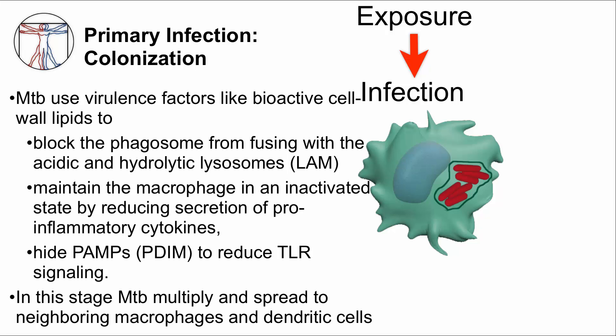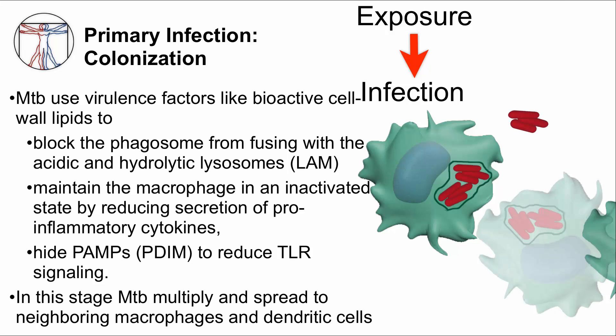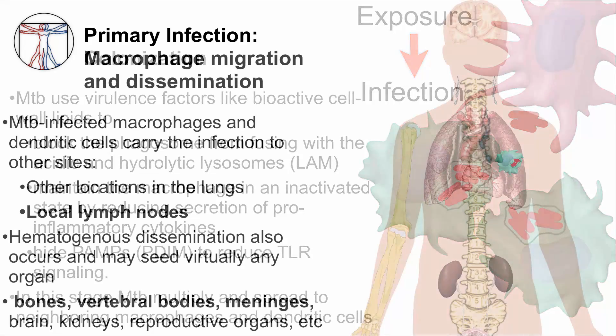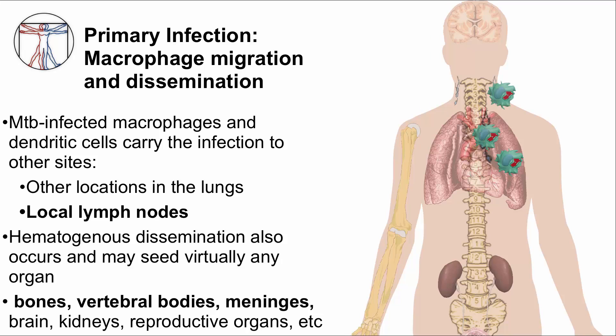The drawing represents MTB surviving within the phagosome of a macrophage. During this stage, MTB not only survives within the macrophage, but it can multiply and spread to neighboring macrophages and dendritic cells. MTB-infected macrophages and dendritic cells can carry the bacilli to other locations in the lung, to local lymph nodes, and hematogenously to virtually any organ in the body. Although MTB is actively replicating and disseminating through the body, the person is entirely asymptomatic and no tissue damage occurs during this period of primary infection with MTB.